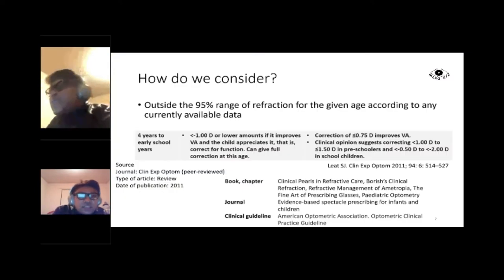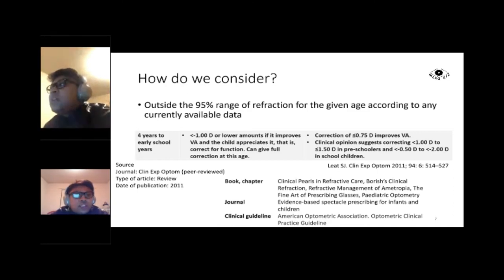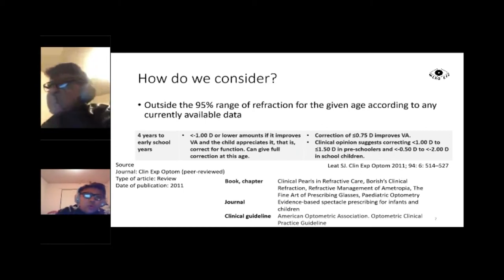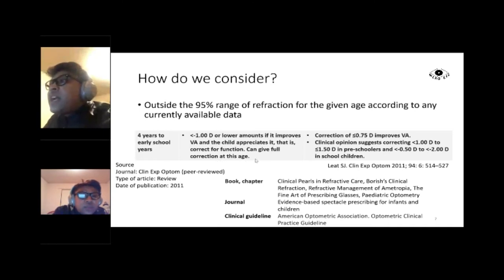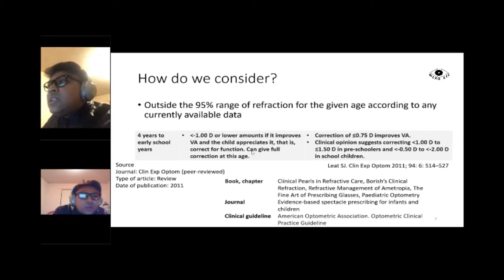Reading a paper doesn't mean reading the whole article — we only extract the information we need. From one paper, it is stated that if the refractive error is outside the 95th percentile range for the given age according to current available data, it should be prescribed. For four-year-olds to early school years, minus one diopter or lower amounts may apply if it improves visual acuity and the child appreciates it. The wording says 'can give' — not 'must give' — emphasizing that there is no absolute rule.